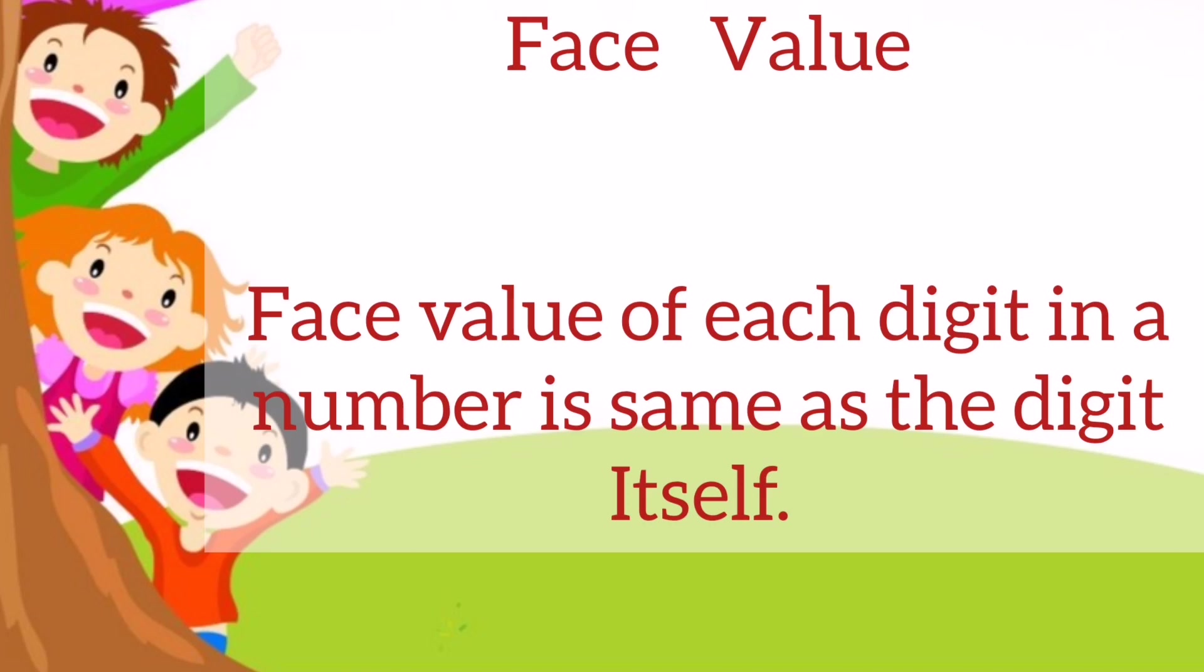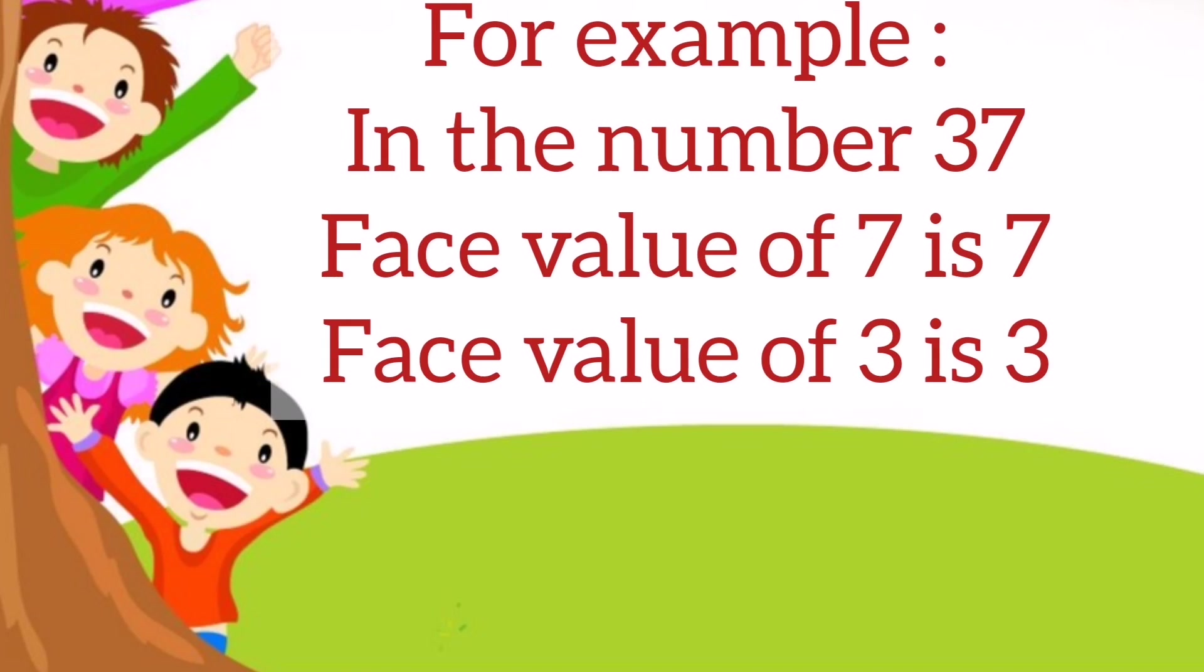Next we have face value. Face value of each digit in a number is same as the digit itself. For example, in the number 37, face value of 7 is 7. Face value of 3 is 3. As you can see, 7 is in the ones place and 3 is in the tens place. There will not be changes in its value. It will remain same as that of the digit.